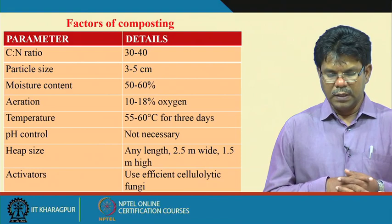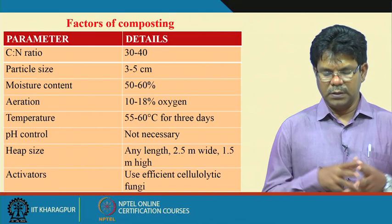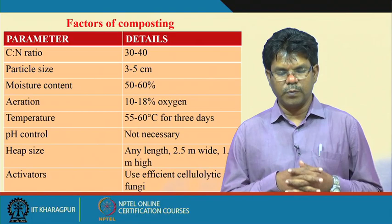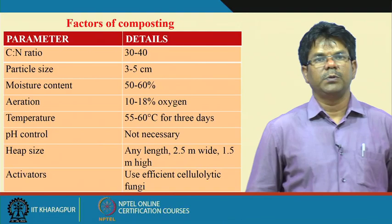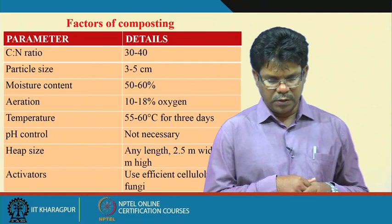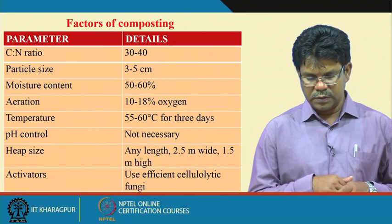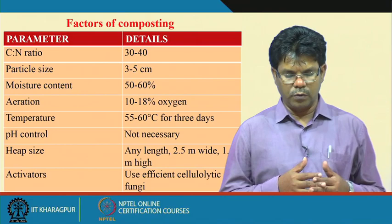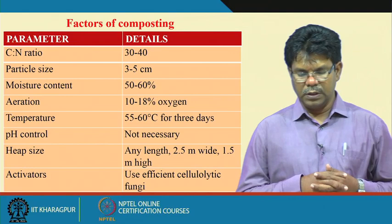Particle size of 3 to 5 centimeters is important because smaller particles increase the surface area, making microbial activity and decomposition faster. Moisture content of 50 to 60 percent should be maintained throughout composting. If moisture content is too high there will be less oxygen, and microorganisms may not survive. The oxygen requirement is around 10 to 18 percent, and moisture content should be 50 to 60 percent throughout the composting process for better microbial growth so they can degrade organic waste faster.